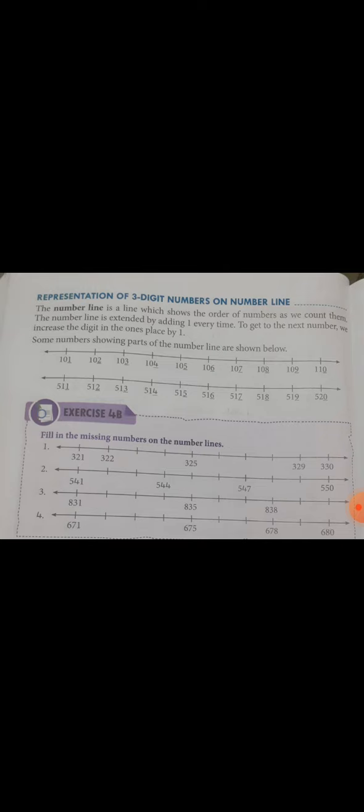Let's suppose the first number given to you is 101, and the second number is given after 5 numbers. So it depends how much you have to understand how it is given to you. So here some numbers are showing, parts of the number line are shown below.